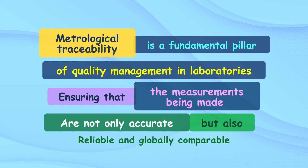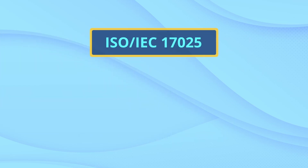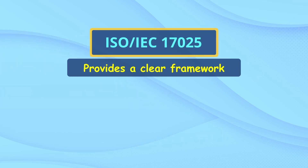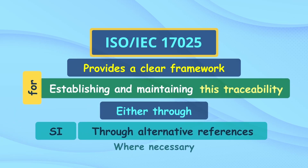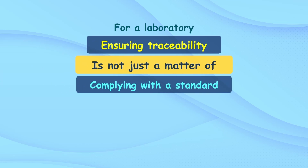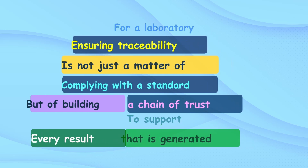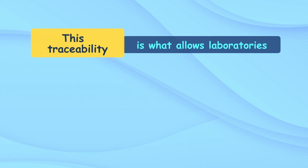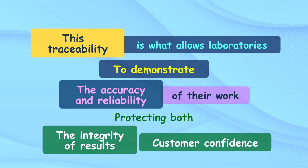Metrological traceability is a fundamental pillar of quality management in laboratories, ensuring that measurements are not only accurate but also reliable and globally comparable. ISO/IEC 17025 provides a clear framework for establishing and maintaining this traceability, either through the International System of Units or through alternative references where necessary. For a laboratory, ensuring traceability is not just a matter of compliance but of building a chain of trust to support every result generated, protecting both the integrity of results and customer confidence.